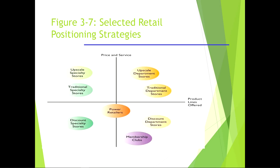Selected retail positioning strategies are illustrated in a figure where price and service versus product lines offered play a big part. For example, membership clubs emphasize price and broad product lines, while upscale specialty stores see price play a major role with limited service and narrower product lines on the other side.